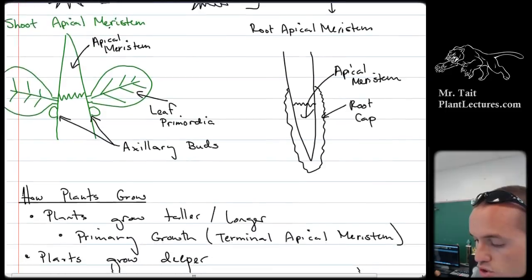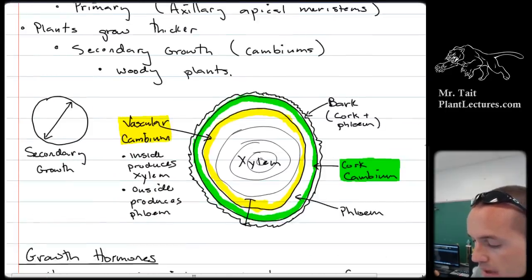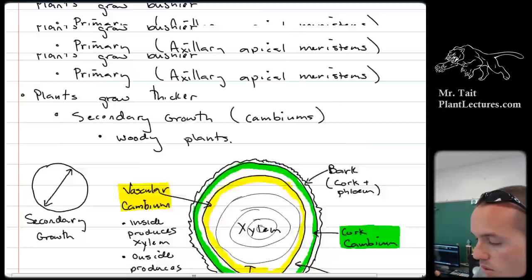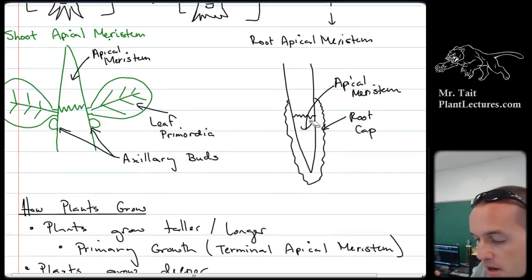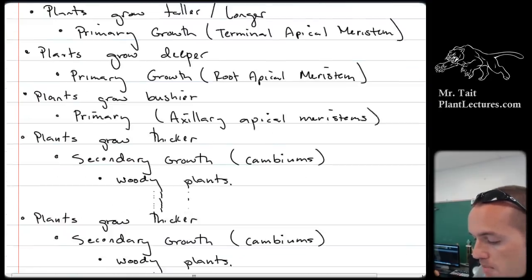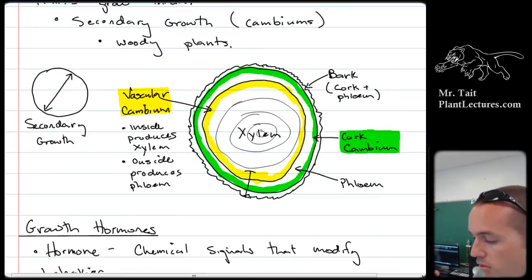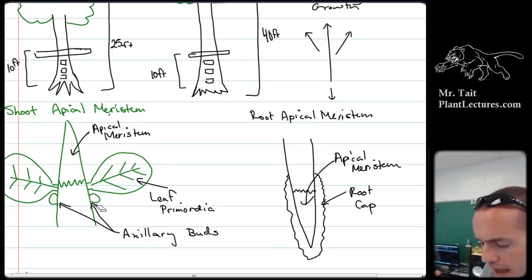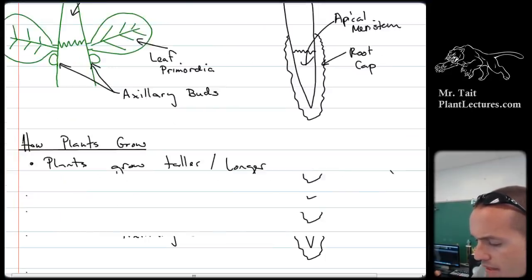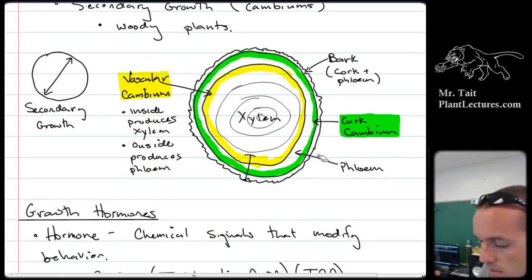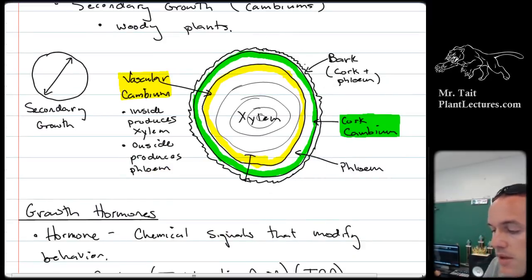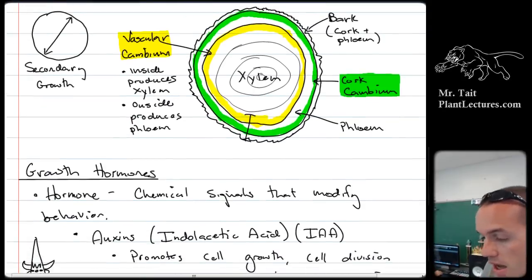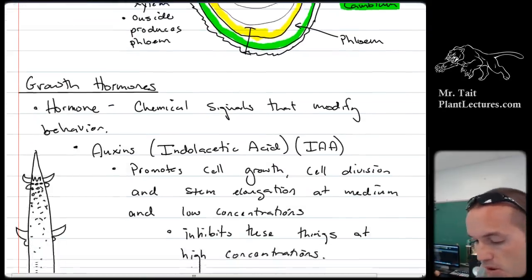Plants grow in two regions only: the cambiums and the meristems. All plants have meristematic growth; only woody plants have cambium growth. Meristems are on the tips of the shoots, the axillary buds, and the tips of the roots. There are two types of cambiums: the cork cambium and the vascular cambium. The vascular cambium produces secondary xylem and secondary phloem. The cork cambium produces cork, which is part of the bark.